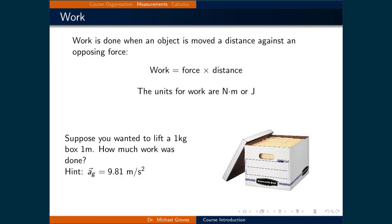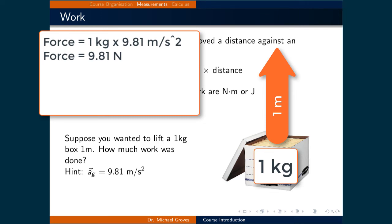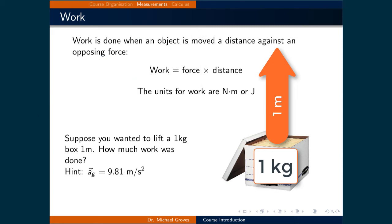Work, however, is something that we will be spending some time on. It is defined as the energy used to apply a force to an object over a distance. Its units are in newton meters or joules. As one example, suppose you wanted to lift a 1 kilogram box 1 meter. The work that is done is equal to the force necessary to lift the box, being 1 kilogram times the acceleration due to gravity, 9.81 meters per second squared, and that is multiplied by the distance traveled, 1 meter. Therefore, the work done to the box is 9.81 joules.